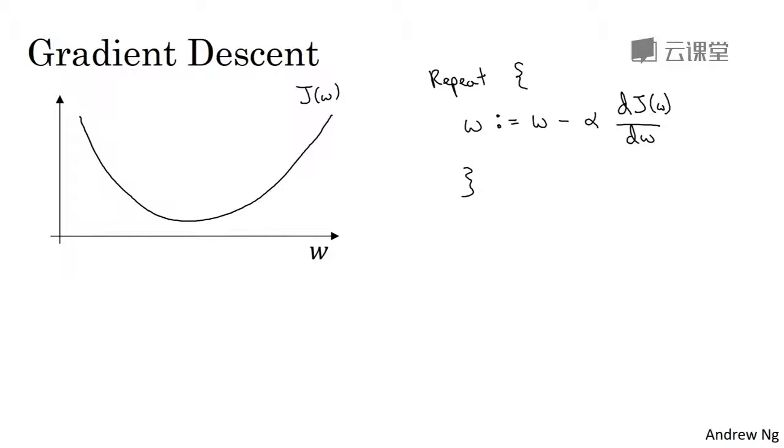So a couple of points in the notation. Alpha here is the learning rate and controls how big a step we take on each iteration of gradient descent. We'll talk later about some ways for choosing the learning rate alpha. And second, this quantity here, this is a derivative. This is basically the update or the change you want to make to the parameters w.